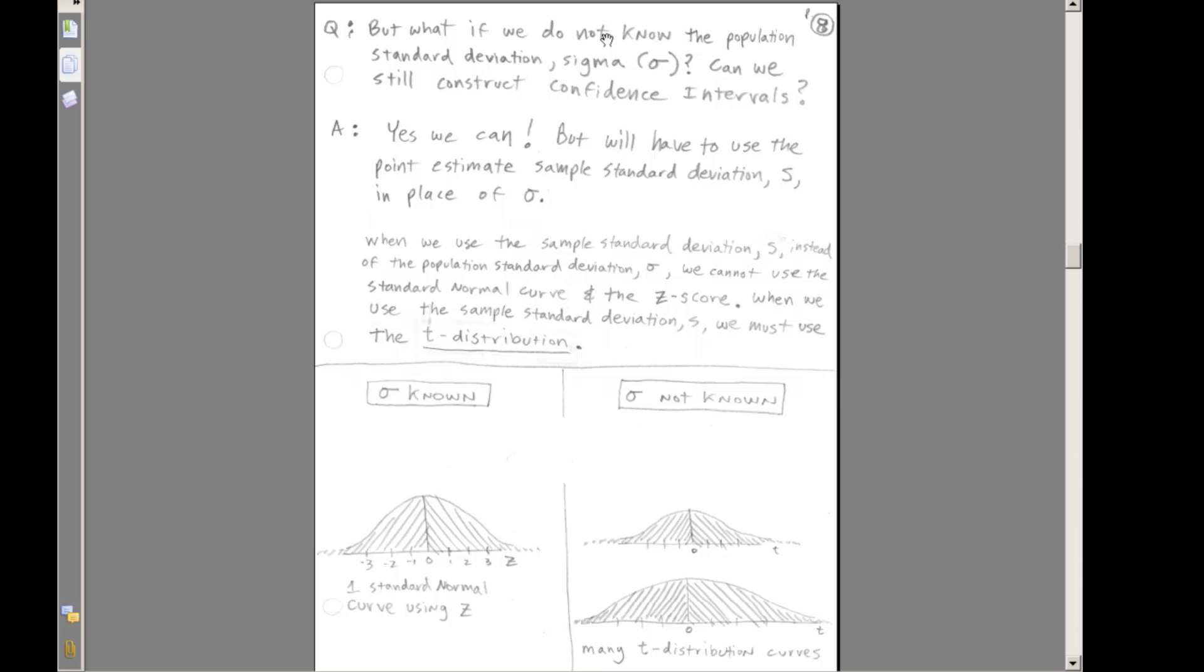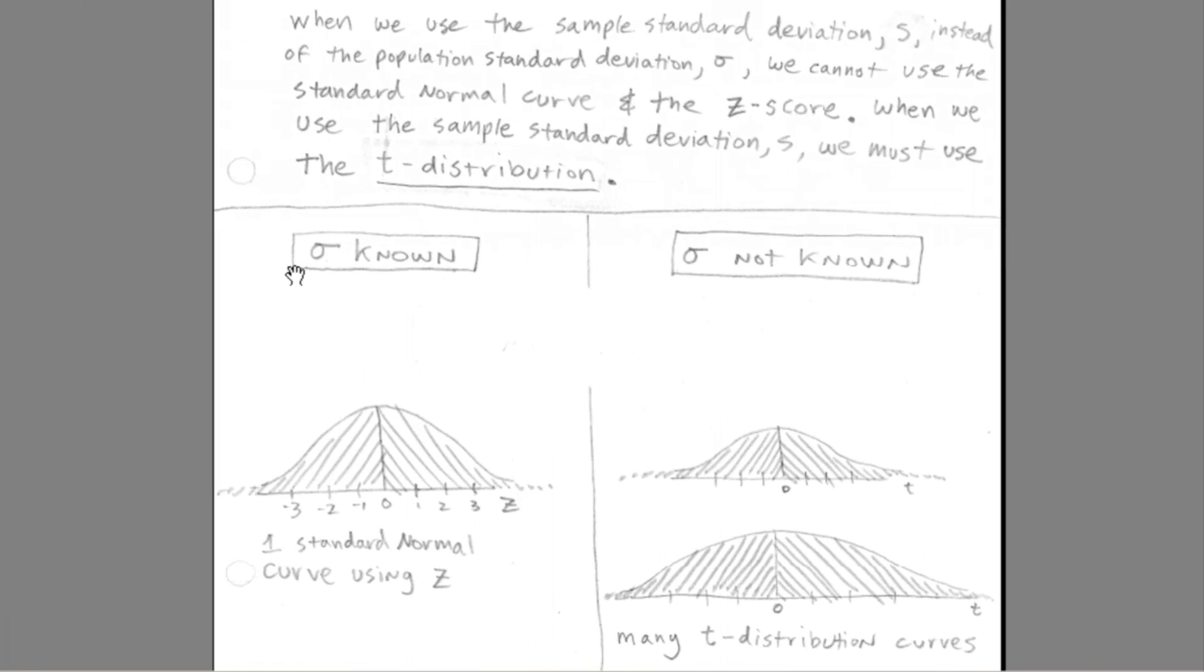In this video, we have to talk about calculating confidence intervals when we don't know sigma. So what we said the last couple of videos is when sigma is known, which is not usually the case, but in some cases it is, we use the standard normal distribution with our z. But now, what do we do if sigma is not known? Well, we're going to use something called the t-distribution.